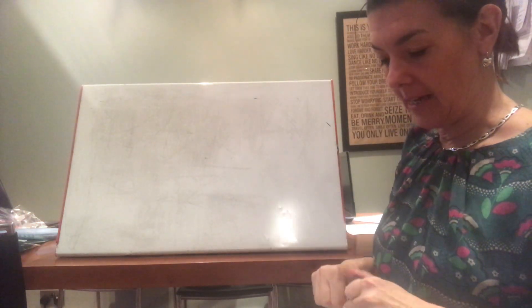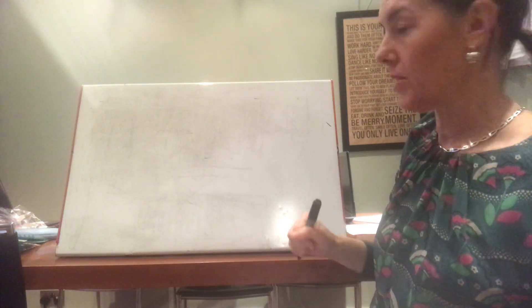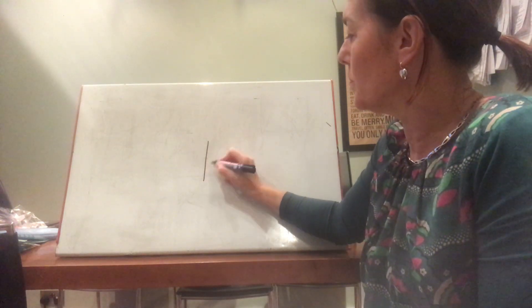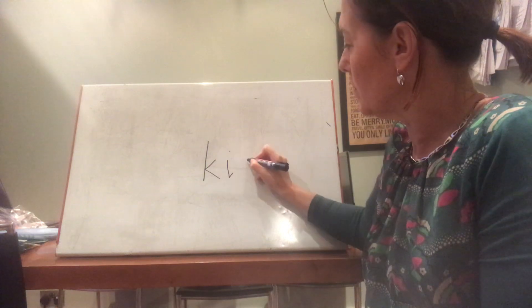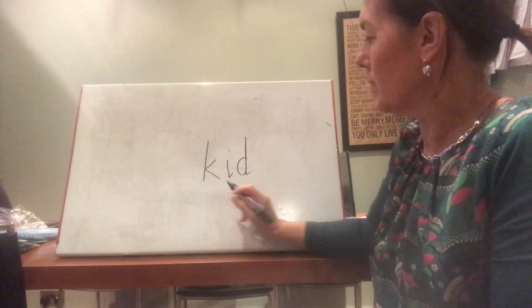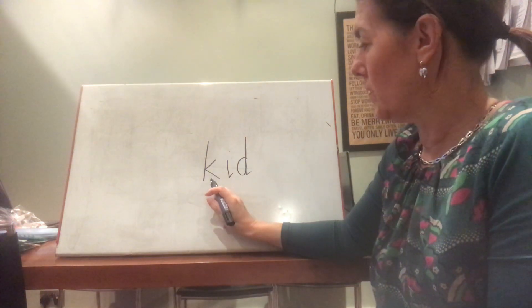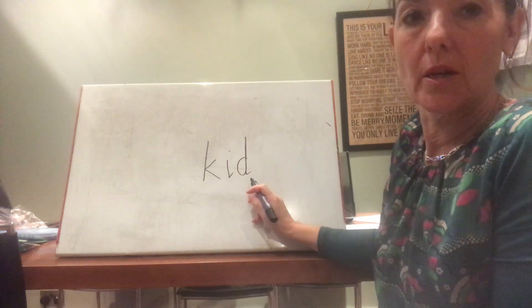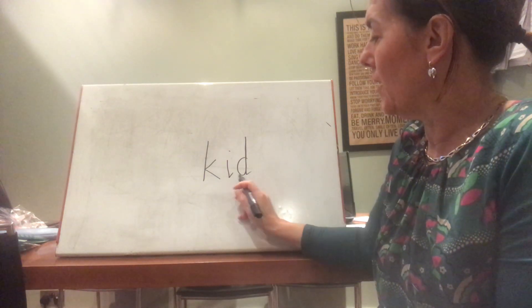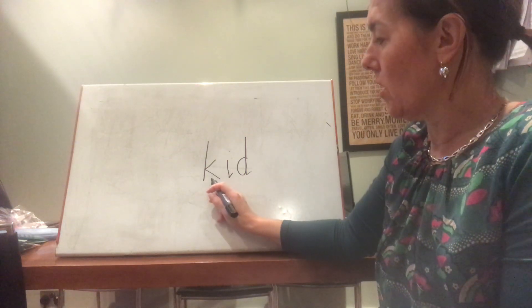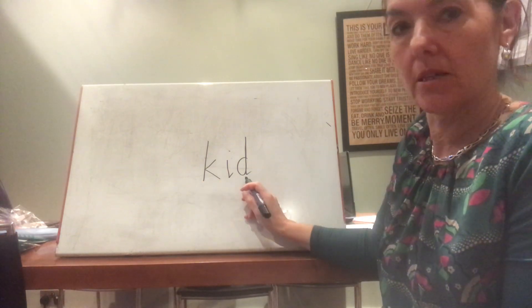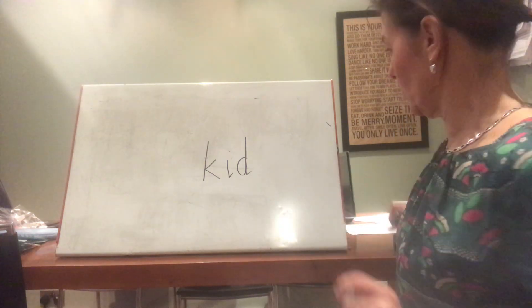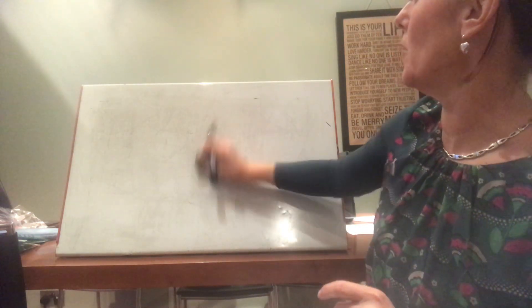OK, we're going to read some words now. So I'm going to write the sounds up. You can say them and then we'll blend them together. Are you ready? Let's see if you can do it by yourself first. Did you get it? Again, k, i, d, kid. Again, k, i, d, kid. Last time, k, i, d, kid. A kid is a baby goat or the name for a child.